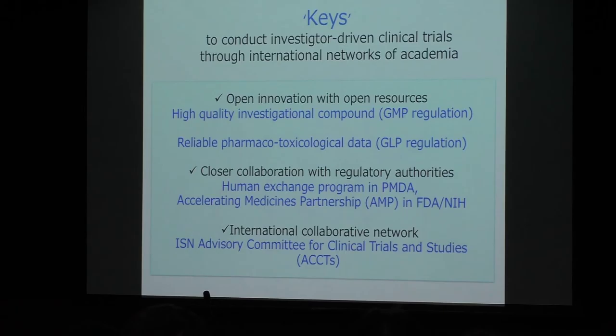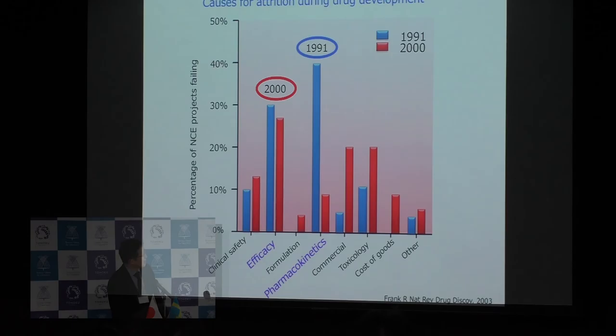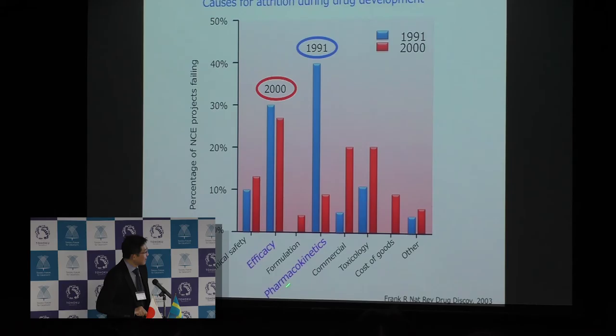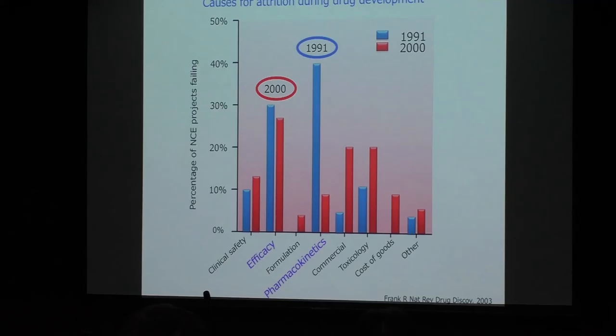International academic societies also play an important role. When I served as an executive committee member of the International Society of Nephrology, ISN, we launched an advisory committee to raise standards in investigator-driven clinical trials, not only in developed countries but also in middle- and low-income countries. The main causes of drug attrition have changed over time. In 1991, poor pharmacokinetic properties were implicated in 40% of failures. Now, the main cause of drug attrition is lack of efficacy in humans, at almost 30%. We may ask whether we can overcome these issues and accelerate new drug development.